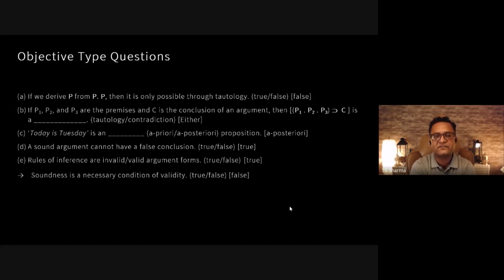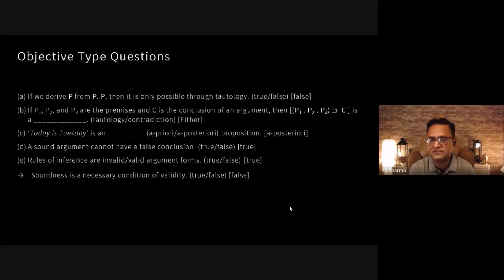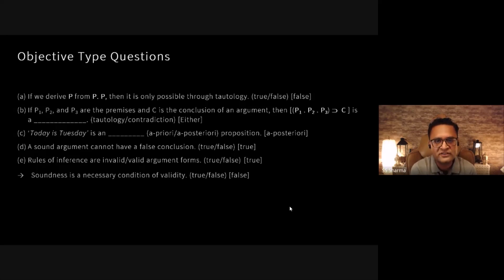The next question was interesting: 'The rules of inference are invalid or valid argument forms.' We know rules of inference are valid argument forms, but from a logical point of view, the disjunction 'invalid or valid' always gives a true result — it has the structure of a tautology, like p ∨ ¬p. Since one of the disjuncts is true, true ∨ false is always true. So the answer was true, though it looks simple.